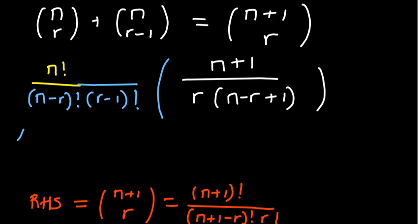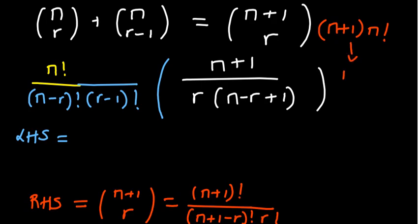For our left hand side at the point we've reached: n factorial times n plus 1 — think about it. N plus 1 in brackets multiplied by n factorial. N is just less than n plus 1 by 1, so if you combine the two, they equal n plus 1 factorial. Just like 7 times 6 factorial equals 7 factorial.